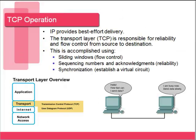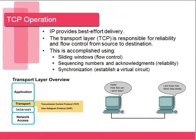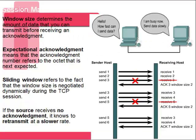TCP is reliable compared to UDP through sliding windows, sequence numbers and acknowledgements, and synchronization. Sliding windows means the amount of data we can send at one point in time can change — it can slide.